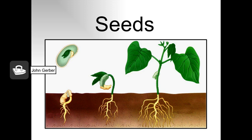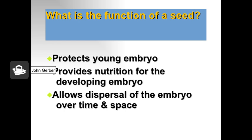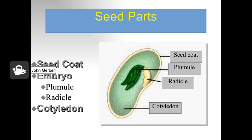Let's take a closer look at seeds. Here's a young bean plant. The functions of a seed are probably a good test question. The seed protects the young embryo from harm, provides nutrition for the developing embryo, and allows dispersal of the embryo over space and time. Looking at the parts of a seed, we see the young embryo — a miniature plant in an arrested state of development that will begin to grow when conditions are favorable.